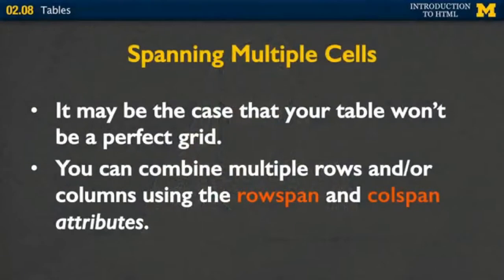One of the things I mentioned earlier when designing your table is deciding whether you're going to be spanning multiple cells. The table you want to make might not be a perfect tic-tac-toe grid. You can combine multiple rows and/or columns using the rowspan and colspan attributes. Inside your element you would include rowspan equals two if you want to span two rows, or colspan equals five if you want it to span five columns.